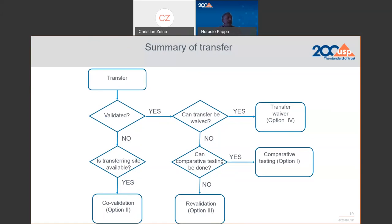If you are trying to transfer a method that is validated and cannot be waived, you can use comparative testing. If not, you will try revalidation. On the other side, if the method is not yet validated, you can do a co-validation between the two laboratories.